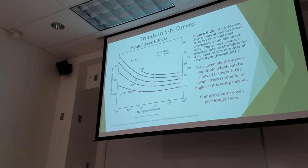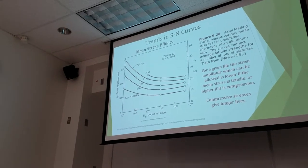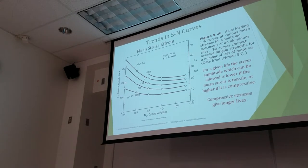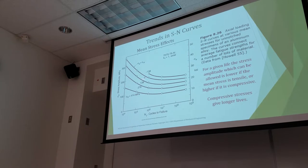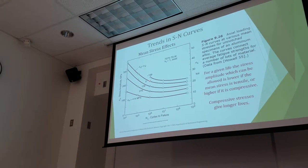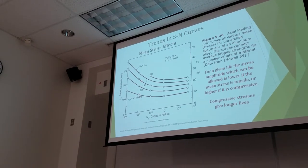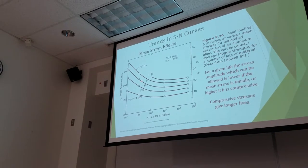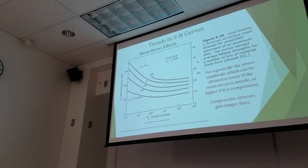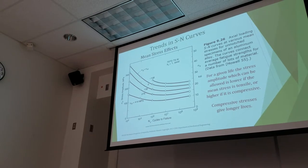So what you can see is as you increase the mean stress for a given stress amplitude, say 200 megapascals — so at 200 megapascals in our fully reversed, we have about a million cycles to failure. But if we increase our mean stress to 138 megapascals, we have less than 10^6 cycles to failure, and we increase it to 276, even less. So our fatigue life is decreasing as we increase that mean stress.